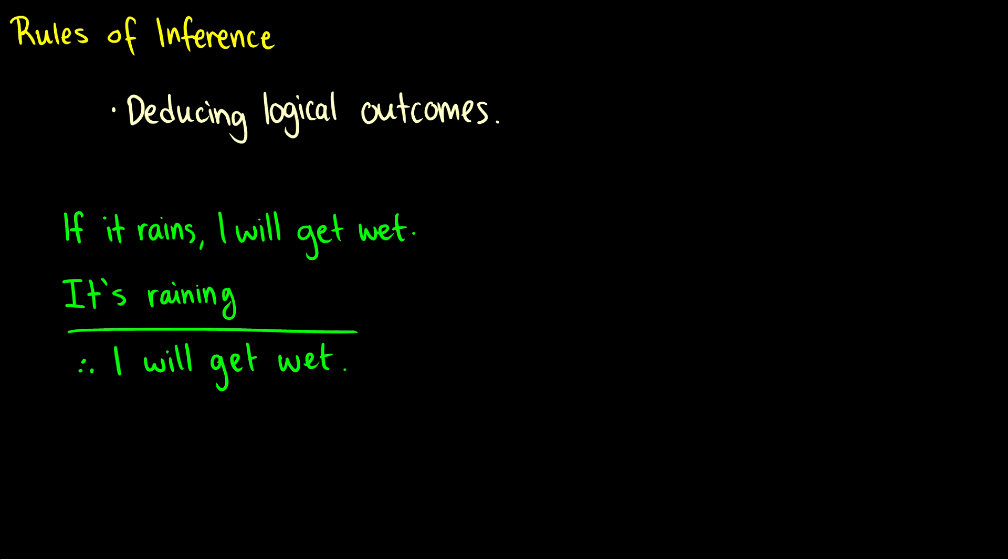Rules of inference are used for taking a set of premises and getting to a conclusion, kind of like a logical argument. So the first example I have is, if it rains I will get wet. It's raining, therefore, these three dots mean therefore, I will get wet. And this is a logical argument.